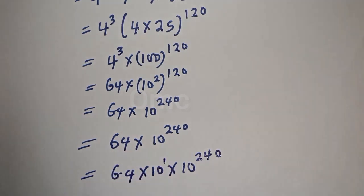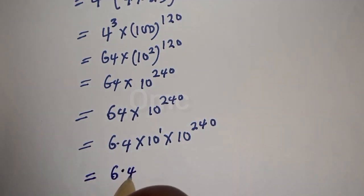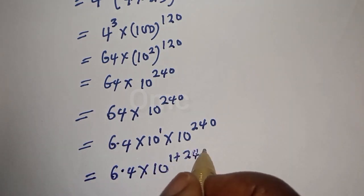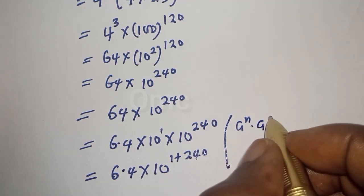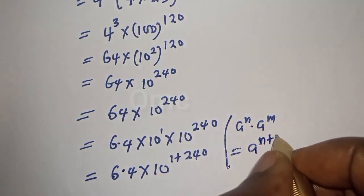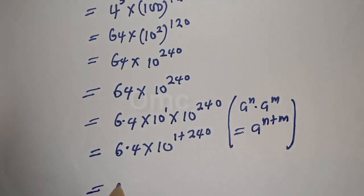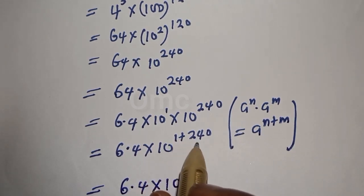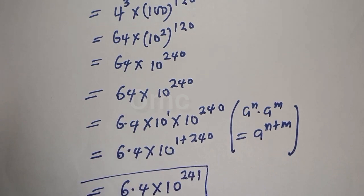This is equal to 6.4 times 10 raised to power 1, multiplied by 10 raised to power 240. Using the rule a raised to power n multiplied by a raised to power m equals a raised to power n plus m, therefore our final answer is 6.4 times 10 raised to power 1 plus 240, that is 241.